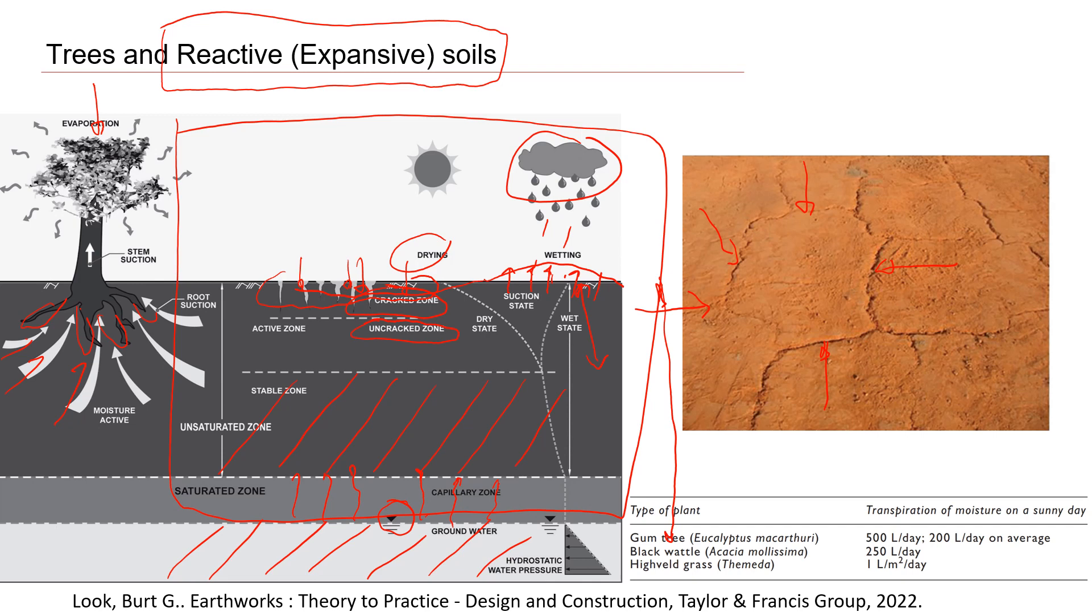If we look at this data, this data I took from this book. If you have time, you can Google it up and read more about suction and reactive soil. You will see that for gum tree, on average, gum tree absorbs or moves about 200 liters of water per day.